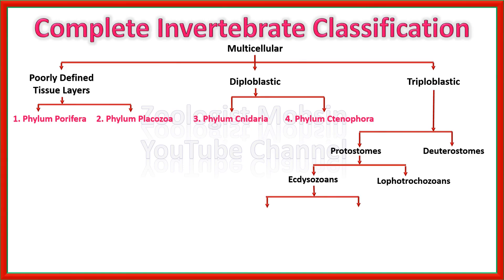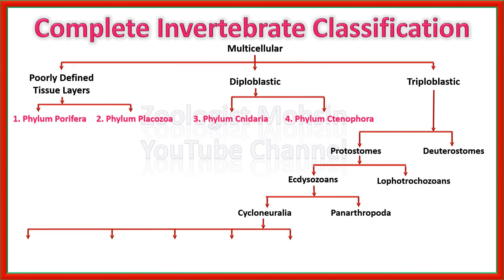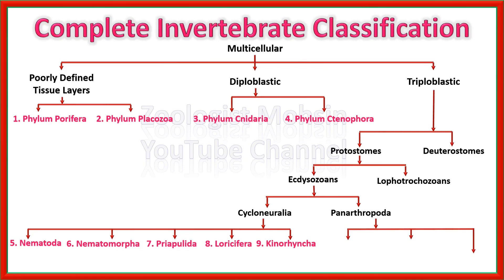Ecdysozoa are further divided into two clades: Cycloneuralia and Panarthropoda. Cycloneuralia are those organisms which have a nerve ring or brain around their pharynx. Among Cycloneuralians there are five phyla: Nematoda, Nematomorpha, Priapulida, Loricifera, and Kinorhyncha. Panarthropoda include Arthropoda, Tardigrada, and Onychophora.